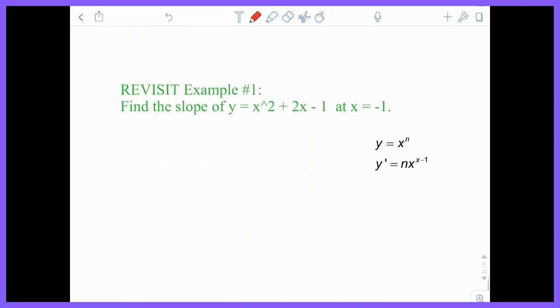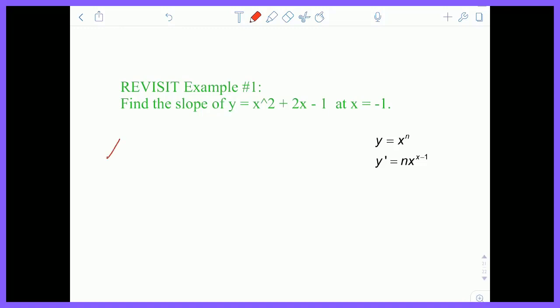Let's revisit example number 1 that we did in the notes using the shortcut. So I asked you to find the slope of y equals that thing at x equals negative 1. So its derivative, very simply, is just equal to 2x to the first power plus 2 and then x to the 0, which would just go away.